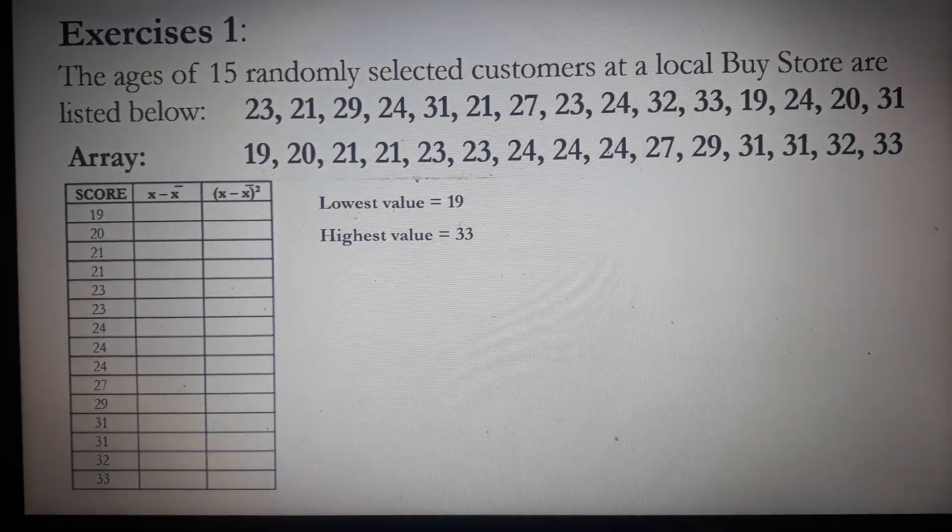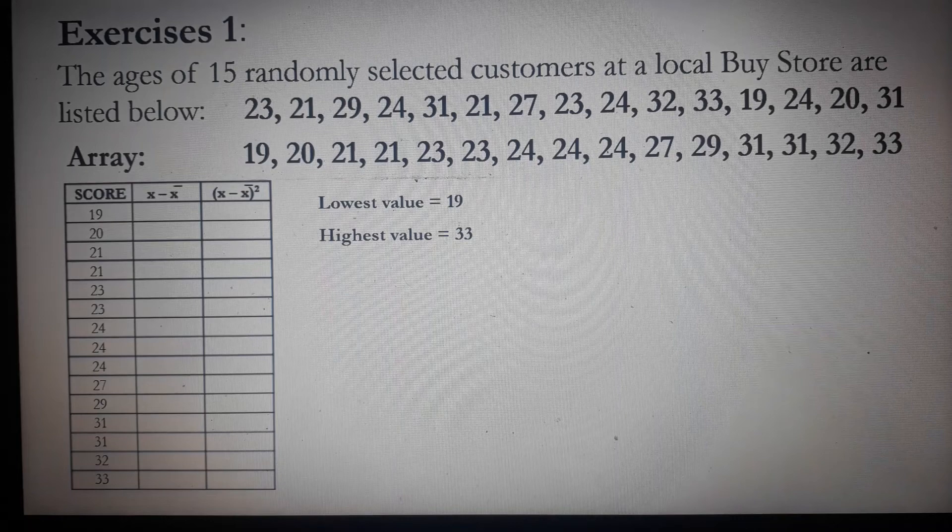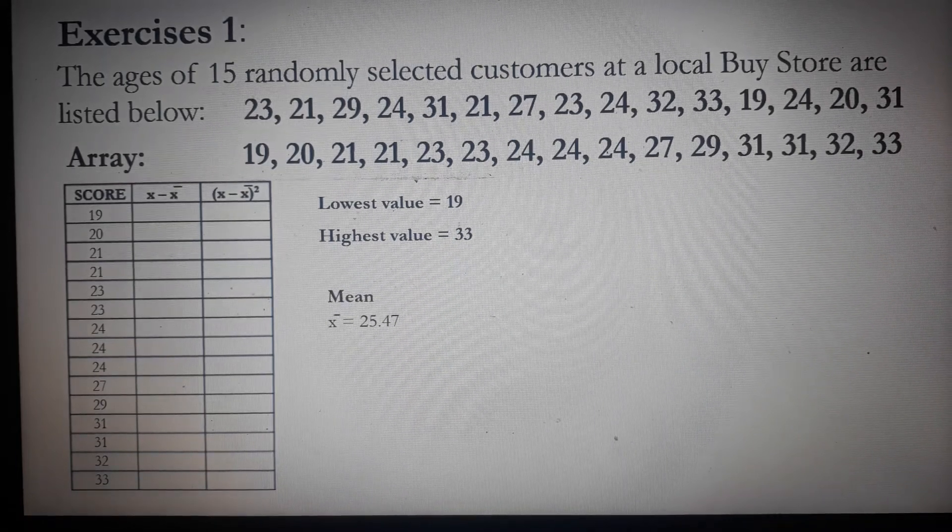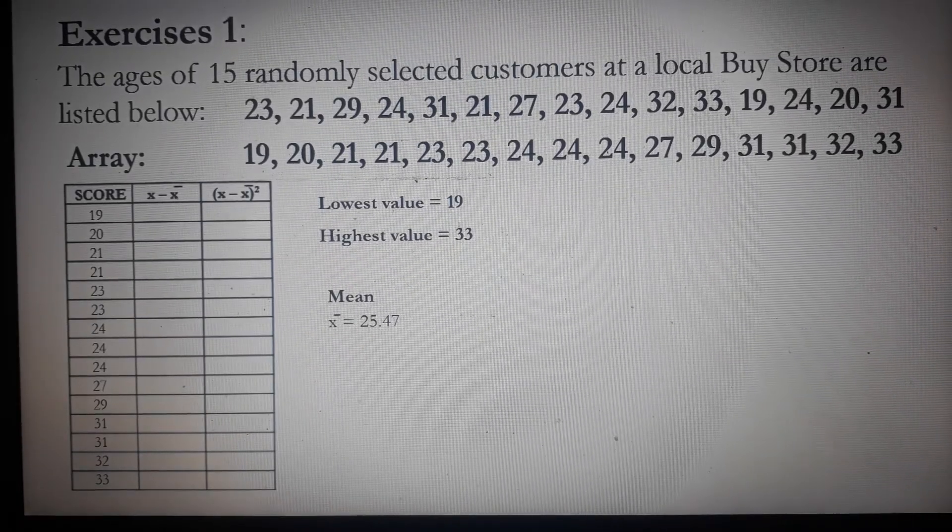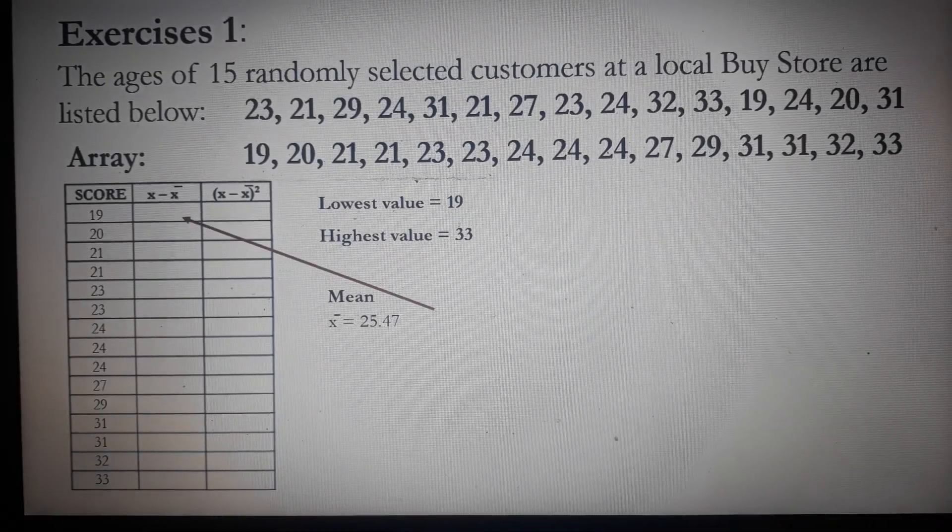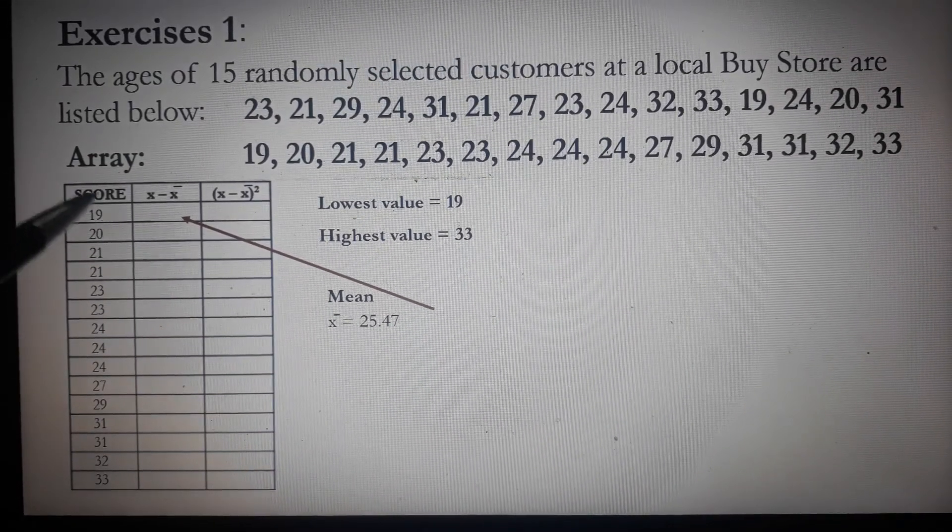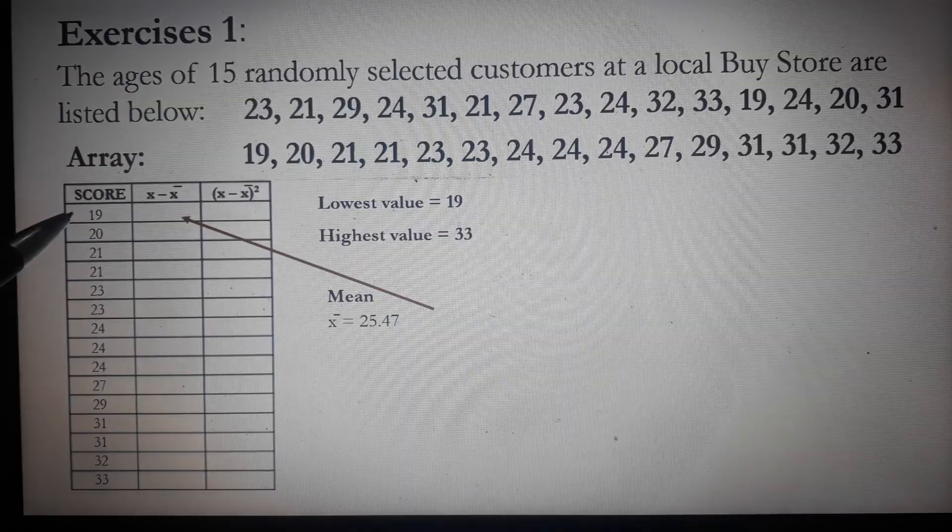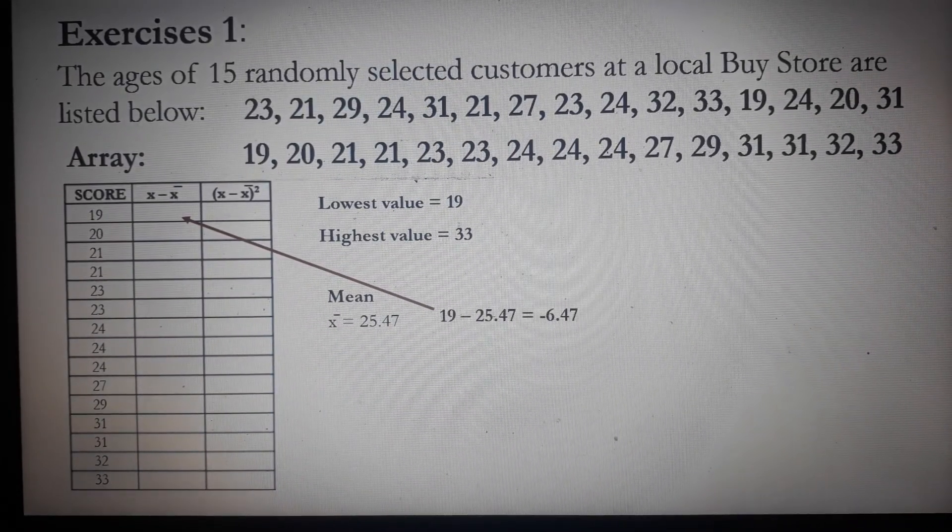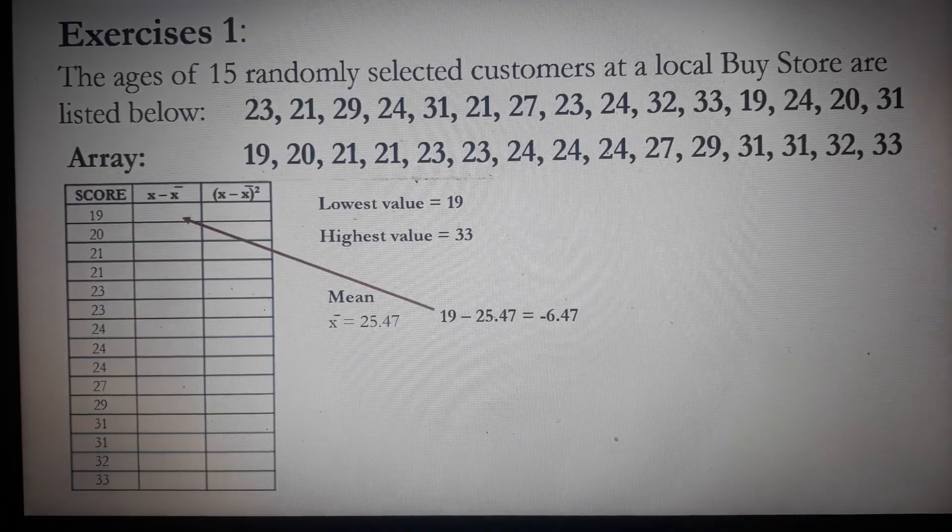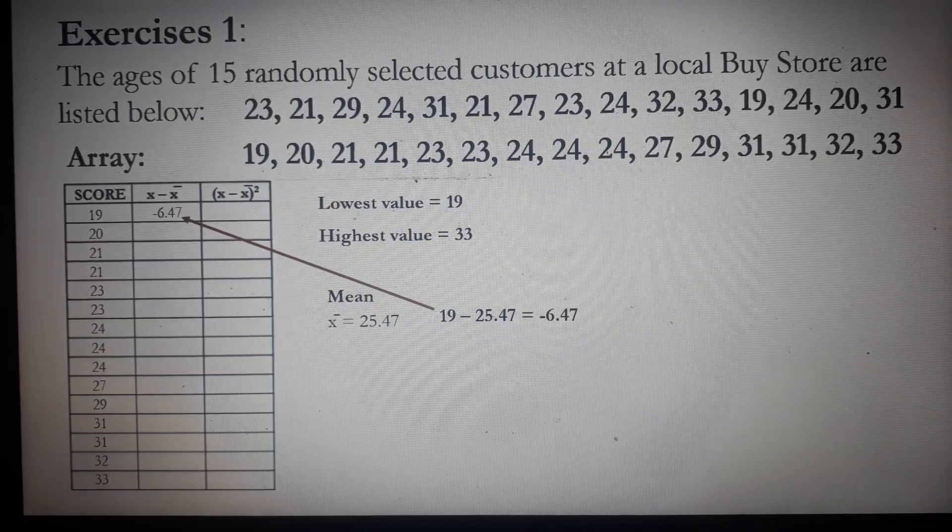The second column is labeled as X minus mean. Recall that the mean is 25.47. So the first entry for this column would be 19 (the value of X) minus the mean, which is 25.47. The result is negative 6.47. So that would be our first entry in column 2.